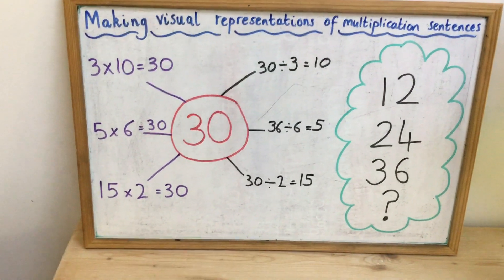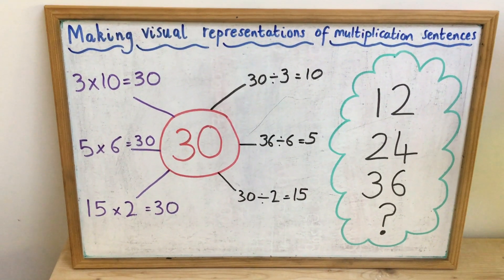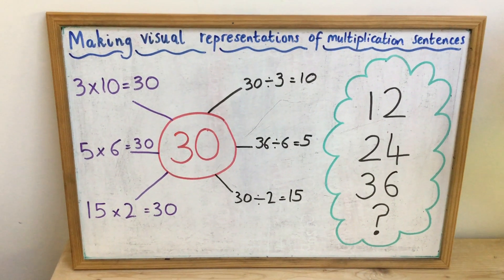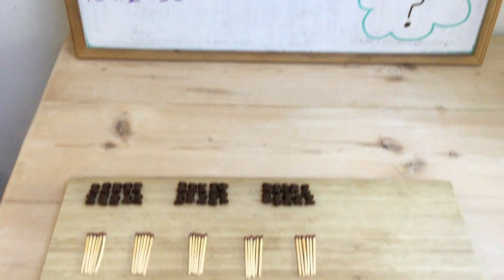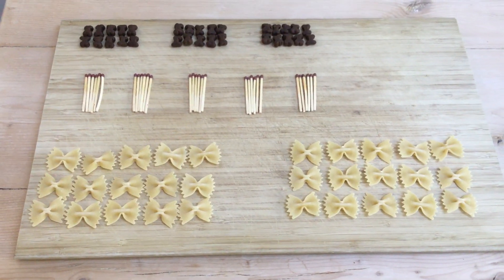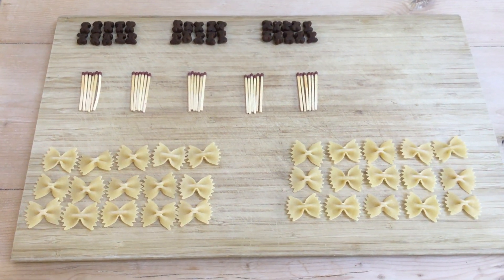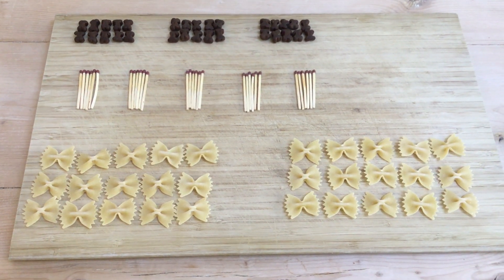My final one was 15 times 2 is 30. And this time I decided I was going to use pasta to make my visual representation. So here's my visual representation using pasta. I've got 2 groups of pasta. And in each group there are 15 of those little pasta bows.